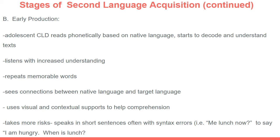The ELL student will also start to take more risks and speak in short sentences, though those sentences might have syntax errors — for example saying 'me lunch now' to mean 'I'm hungry, when is lunch?' They might not have all the vocabulary words, but they're starting to practice speaking. It's important to recognize they're attempting to communicate and to value that communication — answer their question, then politely correct how they said it in a positive way, emphasizing the significant effort and risk they took in communicating in their second language.